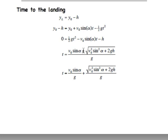So, negative b is positive v0 sine alpha. b squared is going to be v0 squared sine squared alpha. 4ac is going to be 2gh. And then 2a is going to be just g.